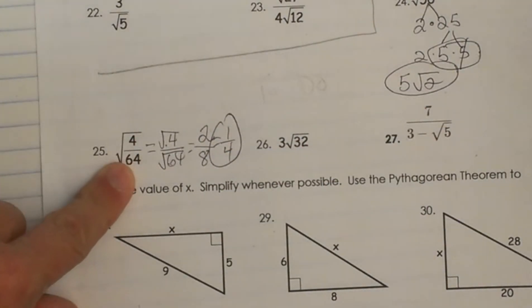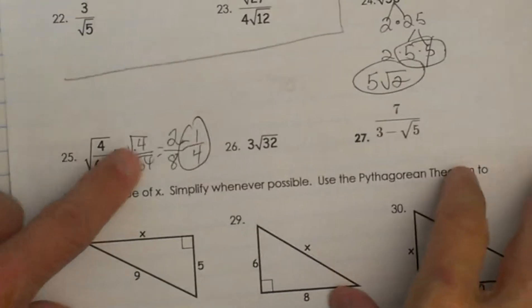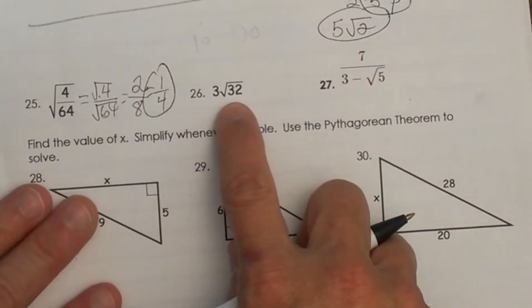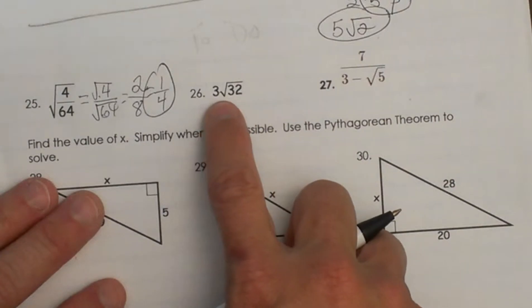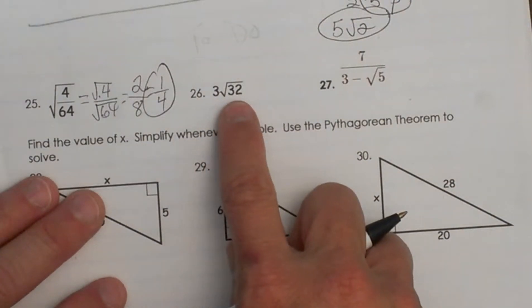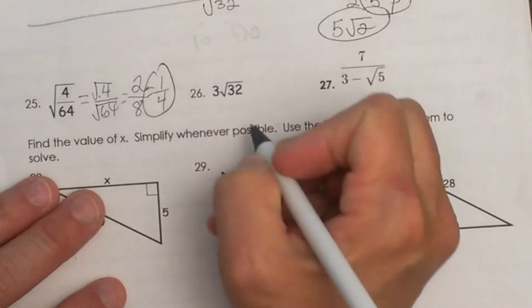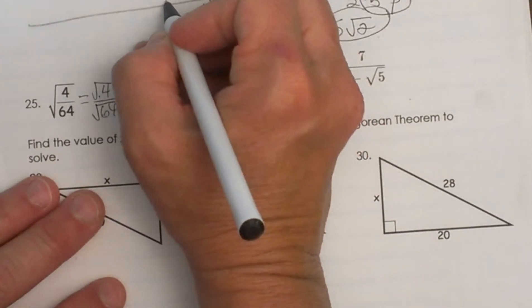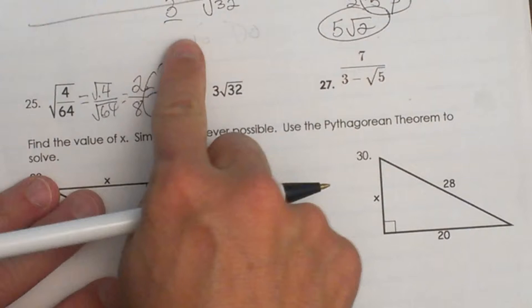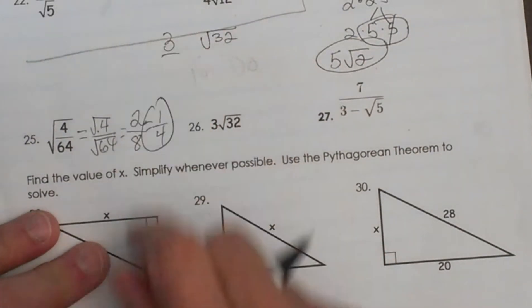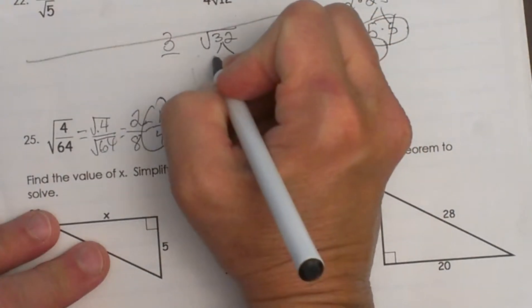Or you can reduce it first and then simplify that square root. Let's look at 26, 3 times the square root of 32. So let's go up here, and I'm just going to use this space to break down the 32. I'm just going to leave the 3 outside, because I'm just going to multiply whatever I simplify here by 3. So let's take this and break it down.